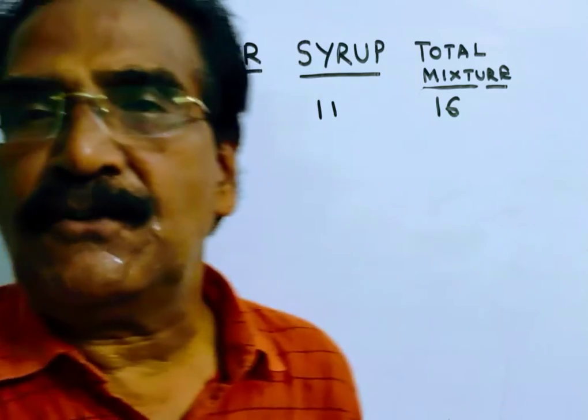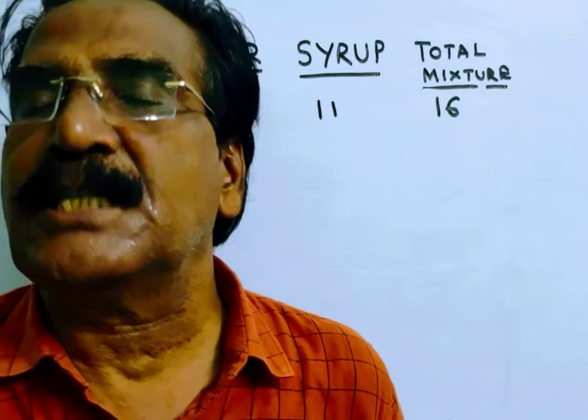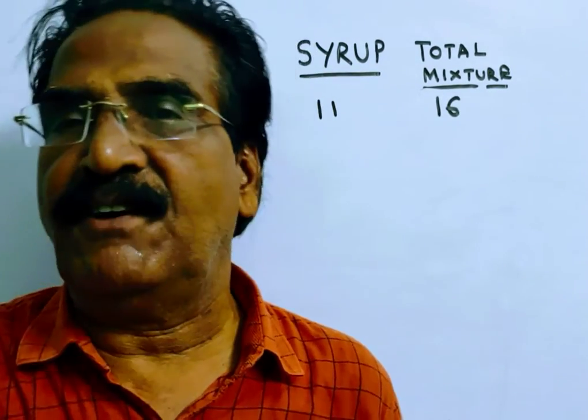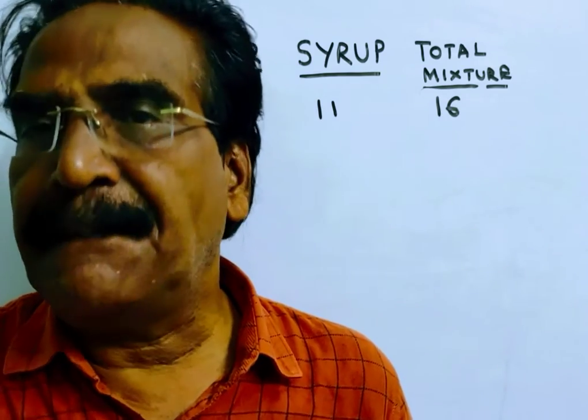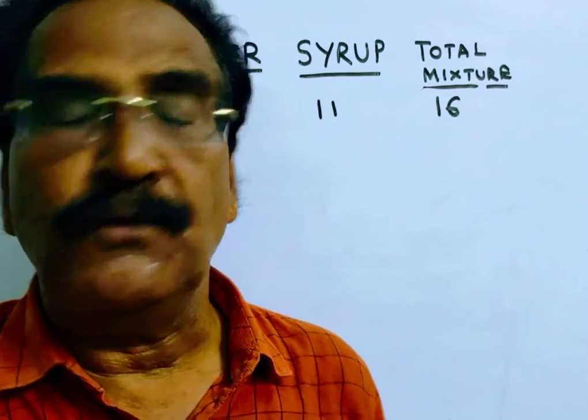Now the question is, what part of the mixture must be drawn off and replaced with water so that the mixture may be syrup and water in the ratio 3 is to 2?